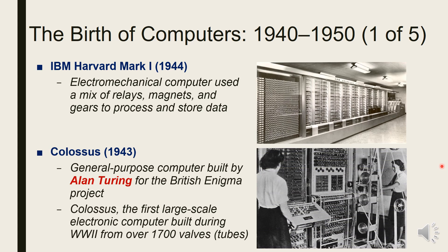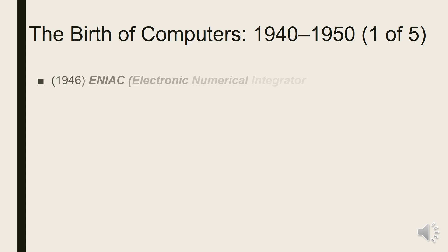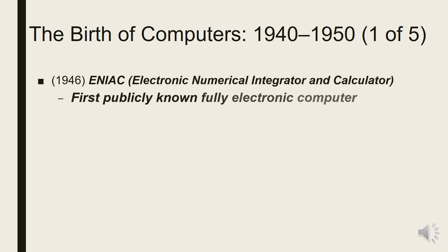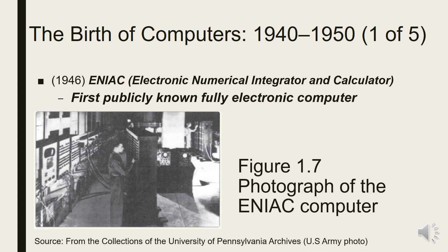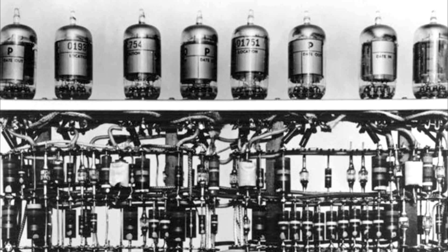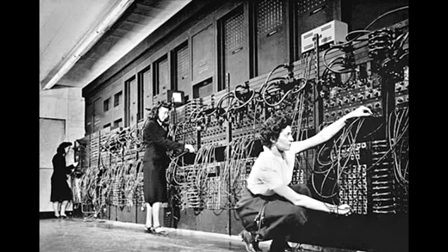The Colossus in 1943 was a general-purpose computer built by Alan Turing for the British Enigma project. Colossus was the first large-scale electronic computer, built during World War II from over 1,700 valves or tubes. Next, the ENIAC in 1946 — the Electronic Numerical Integrator and Calculator — was the first publicly known fully electronic computer, built out of nearly 17,500 vacuum tubes, 7,200 diodes, and many miles of wire.